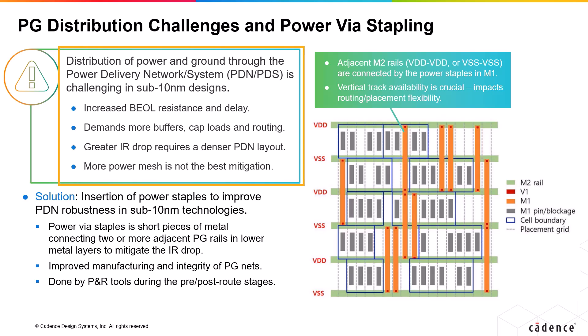The resulting routing increases capacitive loads and power consumption, which causes greater supply voltage IR drop, and requires a denser PDN layout, which causes more congestion again. In sub-10 nanometer technologies, due to this vicious cycle, adding power mesh is not always the best mitigation of IR drop.